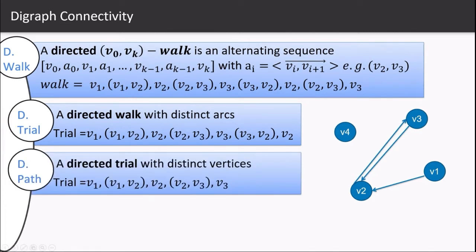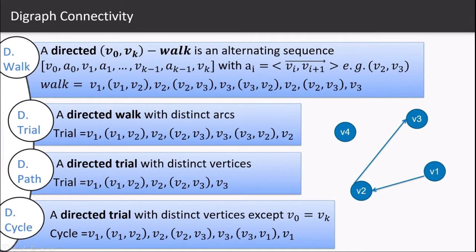A directed path is a directed trail with distinct vertices. So in our directed trail we have v2 twice. By simply removing one v2, we end up in our directed path. A directed cycle is a directed trail with distinct vertices except the first and the last. So we simply add the first vertex at the end of the directed trail and end up in a directed cycle.